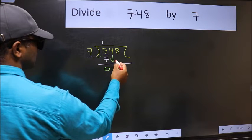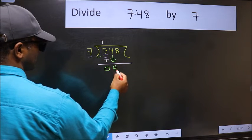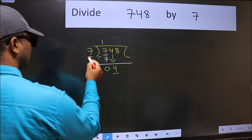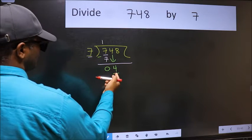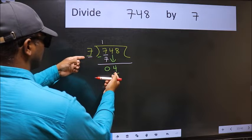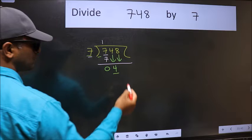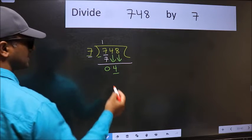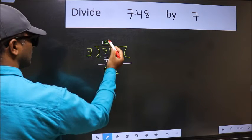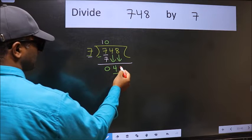After this bring down the beside number. So 4 down. Now here we have 4 and here 7. 4 is smaller than 7. So we should bring down the second number. And the rule to bring down second number is we should put 0 here. Then only we can bring this number down.